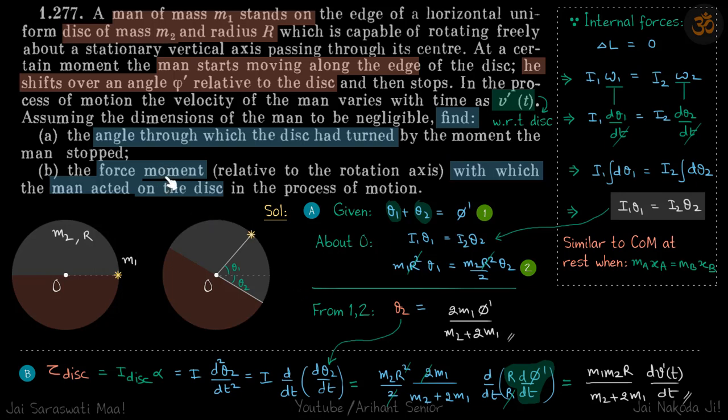Now coming to the second part, we need to find the torque as a function of time with which the man is acting on the disc. v dash t is given with respect to the disc. We need to find the torque on the disc, which is rotating it with angle theta 2. This theta 2 is the extreme, but I don't want to use another variable. In between also, let's say the angle turned by the disc is theta 2.